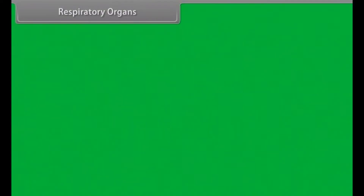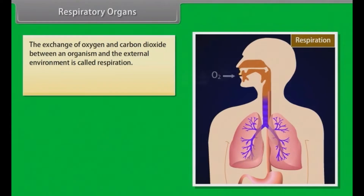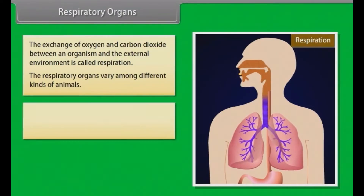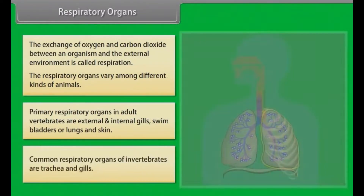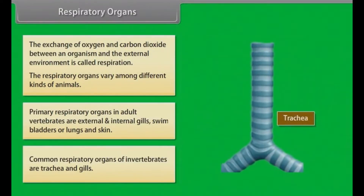Respiratory Organs. The exchange of oxygen and carbon dioxide between an organism and the external environment is called respiration. Respiratory organs vary among different kinds of animals. Primary respiratory organs in adult vertebrates are external and internal gills, swim bladders or lungs, and skin. Common respiratory organs of invertebrates are trachea and gills.